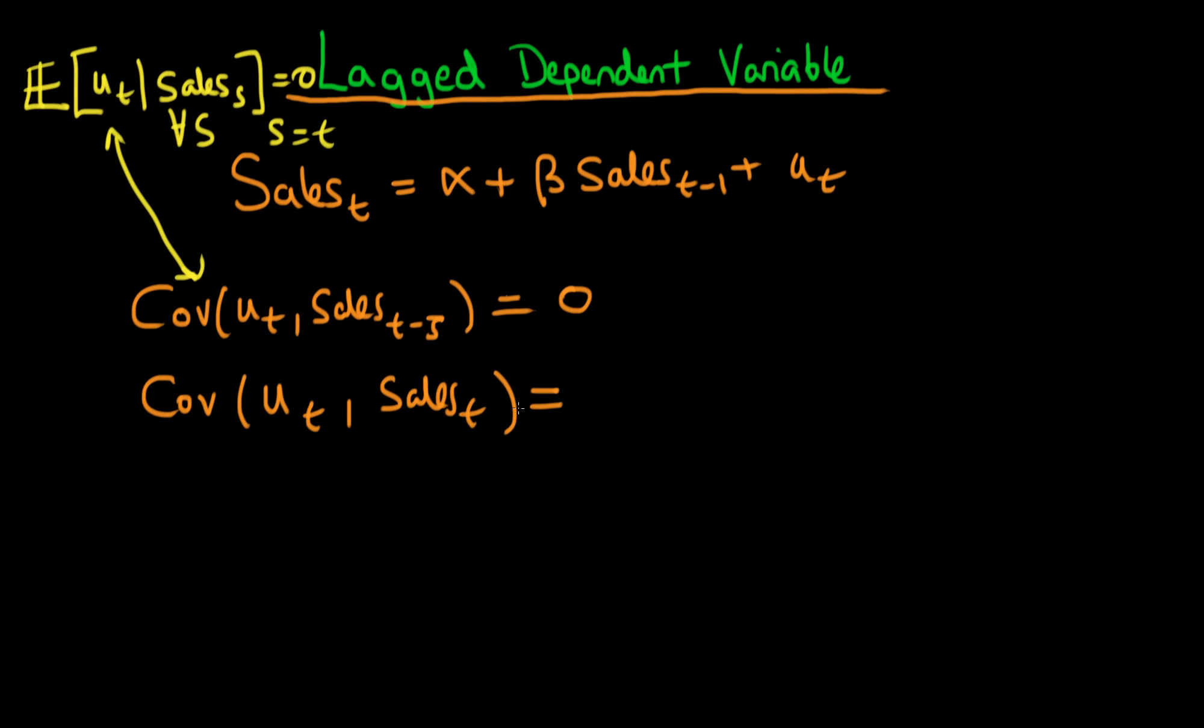But in this situation where we've got sales as a lagged dependent variable, that's not going to be the case because we can rewrite this as the covariance of ut with sales, where we just replace sales by our relationship here, which says that we've now got the covariance of ut with alpha plus beta times sales at time t minus 1 plus ut.